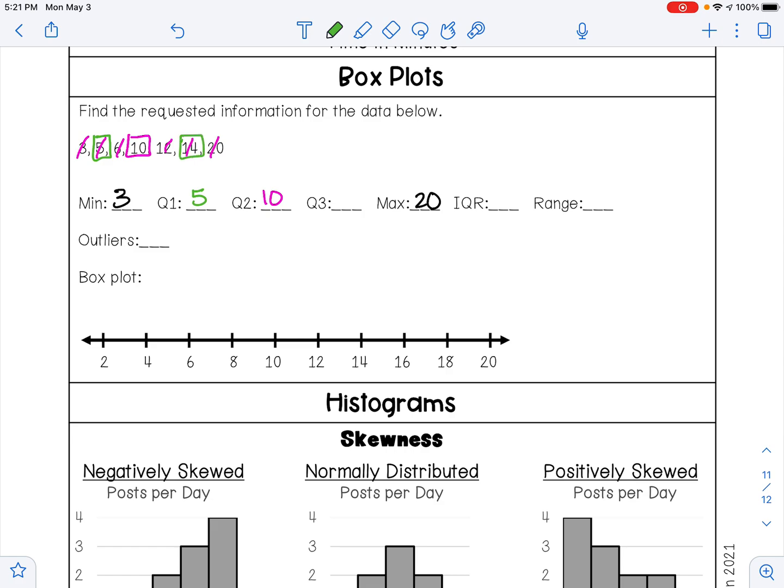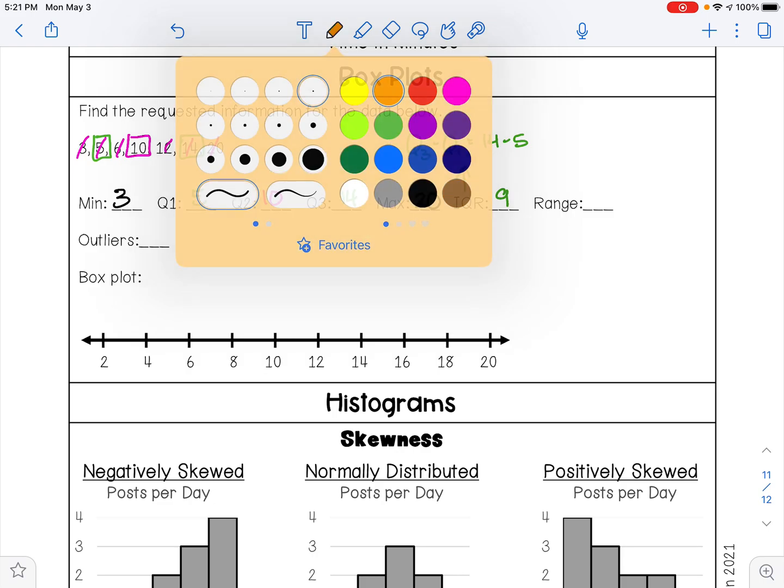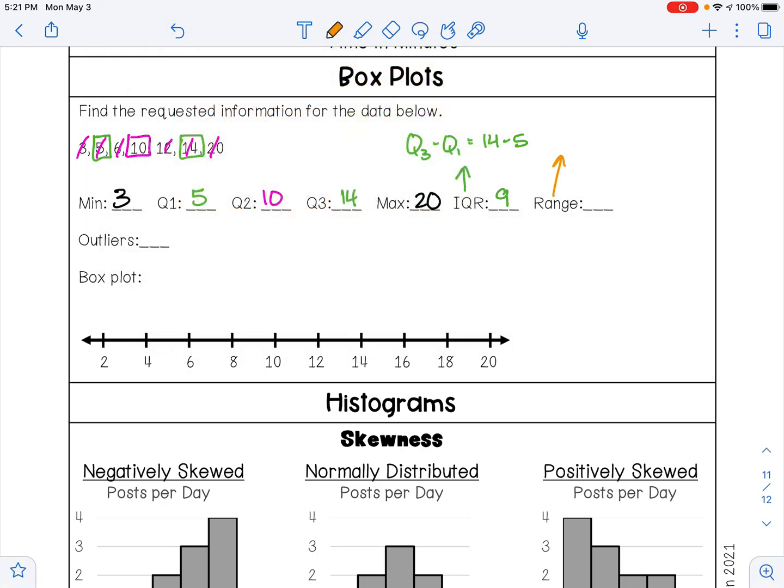And Q3 is the middle of my second half, so that's going to be fourteen. The IQR is interquartile range, and that's Q3 minus Q1, so here fourteen minus five is nine. Your range is your maximum value minus your minimum value, so in this problem that's going to be twenty minus three, which is seventeen.